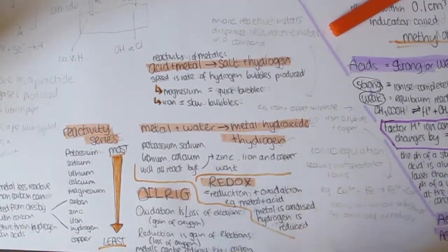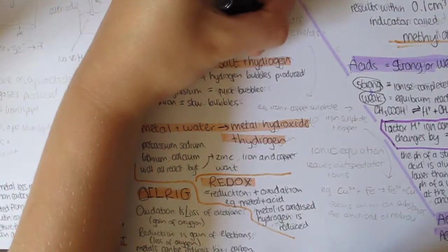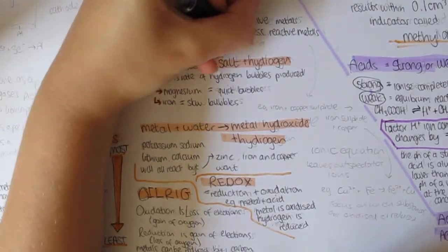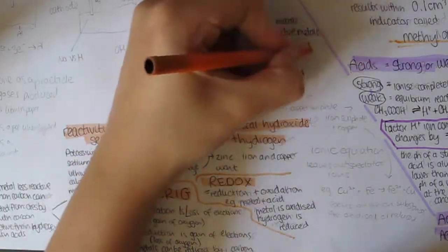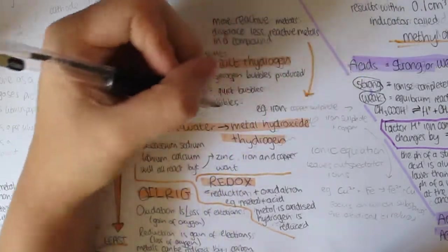A more reactive metal will always displace a less reactive metal from its compound. For example, iron plus copper sulfate makes iron sulfate plus copper. In this reaction, because the iron loses electrons it is oxidized, and copper gains electrons because it's reduced.